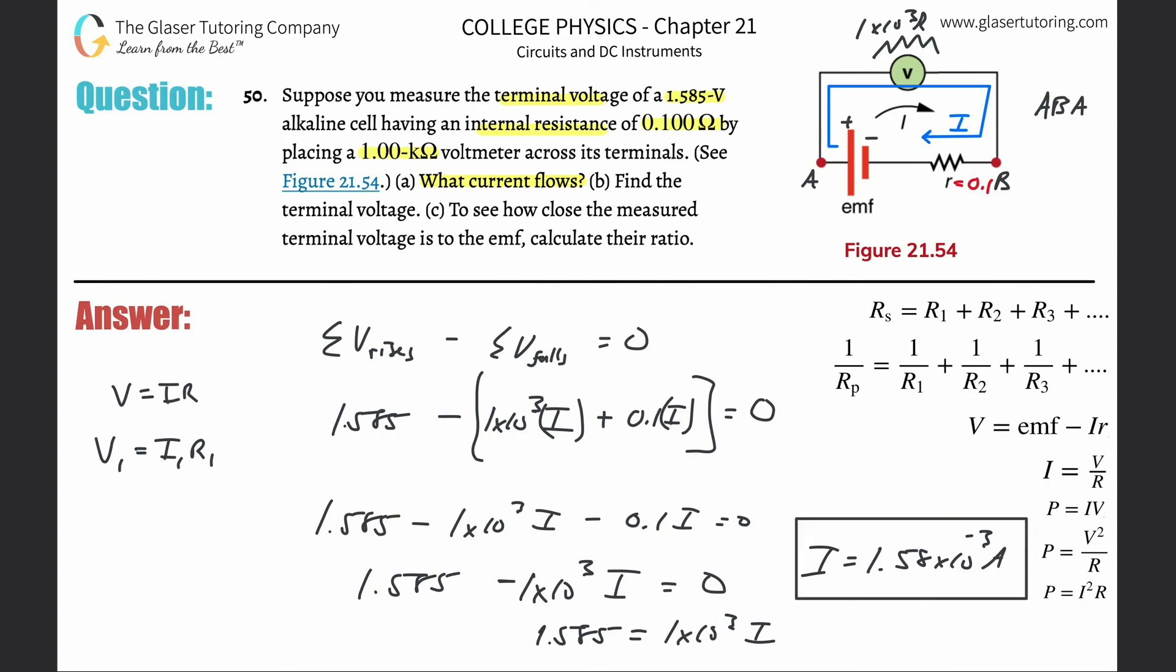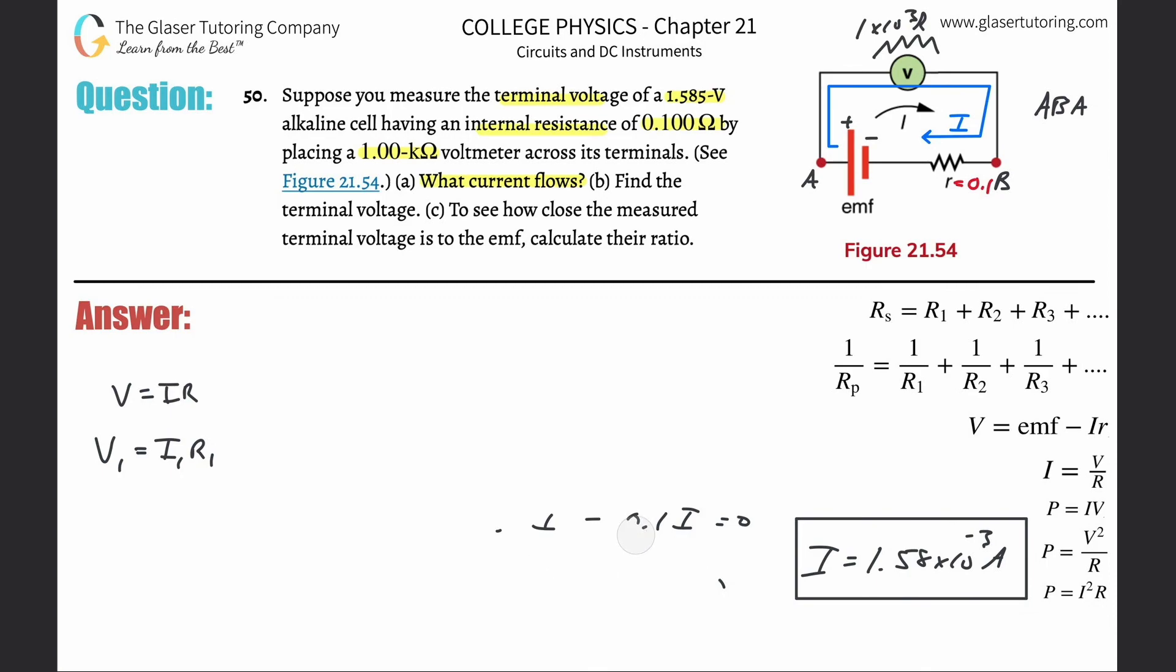That takes care of that. Now it says to find the terminal voltage. We're going to use the terminal voltage formula, which basically says that the terminal voltage is equal to the emf of the battery minus the current that flows multiplied by its internal resistance. So the emf was 1.585 minus the internal resistance of 0.1